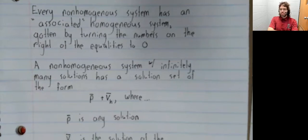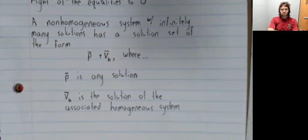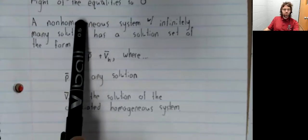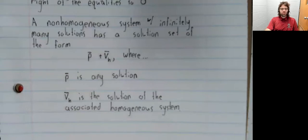Every non-homogeneous system has an associated homogeneous system, gotten by turning the numbers on the right of the equalities all to zero. A non-homogeneous system with infinitely many solutions has a solution set of the form P plus V sub H, where P is a solution to the non-homogeneous system and V sub H is the solution of the associated homogeneous system.